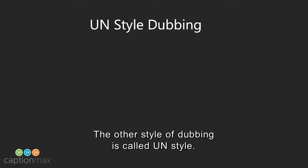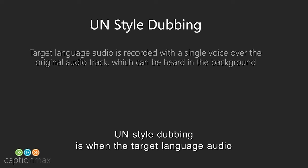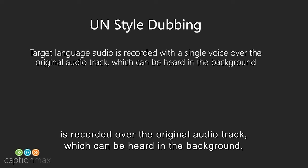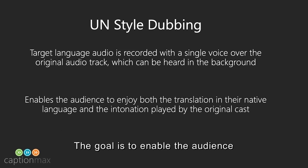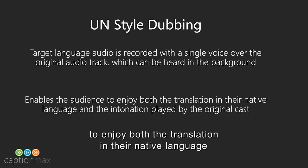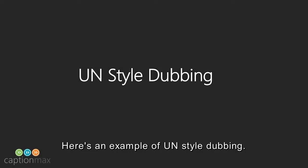The other style of dubbing is called UN-style. UN-style dubbing is when the target language audio is recorded over the original audio track, which can be heard in the background, using a single voice. The goal is to enable the audience to enjoy both the translation in their native language and the original intonation as played by the original cast. Here's an example of UN-style dubbing.